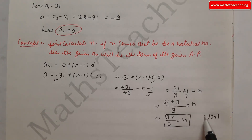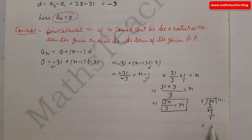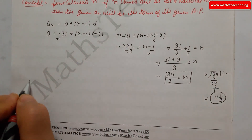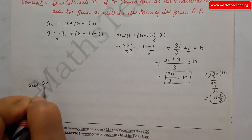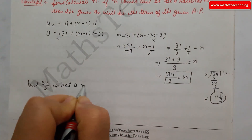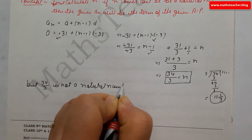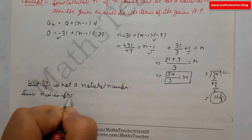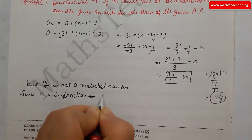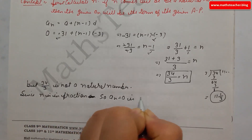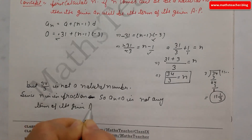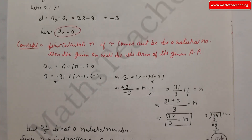Solving further, N = 31/3 + 1 = 34/3. Since 34 divided by 3 leaves a remainder, N = 34/3 is not a natural number — it is a fraction. Since N is a fraction and not a natural number, AN = 0 is not any term of the given AP. This means 0 is not a term of this AP.